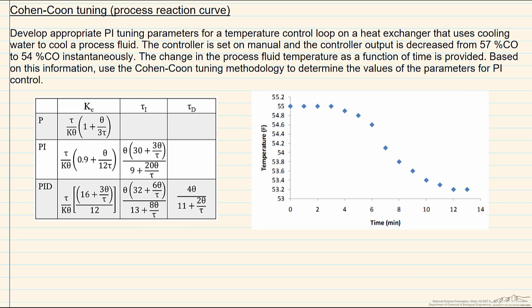Based on this information from this test, how can we develop appropriate parameters for PI control using the Cohen-Coon tuning methodology? So Cohen-Coon is one of many types of tuning parameter correlations that is based on open loop testing, and an open loop test is what we have just described earlier, which is basically the controller being on manual and an adjustment being made to that controller.